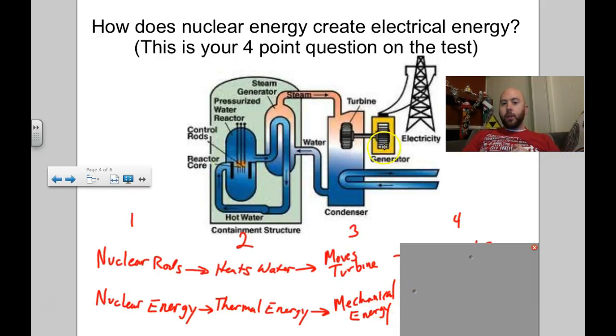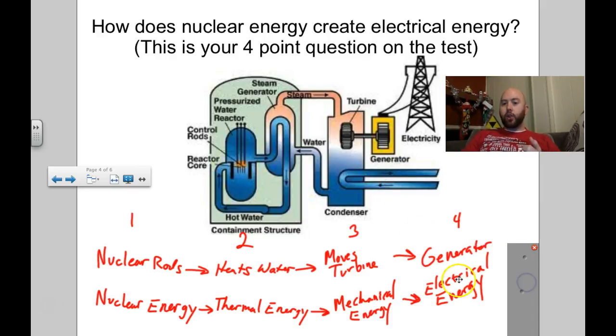So nuclear rods heat up water to move a turbine, which is nuclear energy changing to thermal energy changing to mechanical energy. And that moving turbine runs what's called a generator. A generator is a machine that takes mechanical energy and creates electrical energy. So a moving turbine runs a generator which creates the electrical energy. Now technically when you go from the mechanical energy to electrical energy, some of that is turned into, because there's friction, thermal energy. And when electrical energy goes into your house, runs along these wires, some of that's lost to thermal energy.